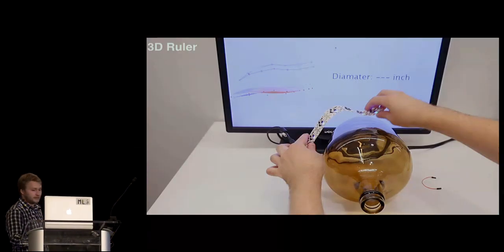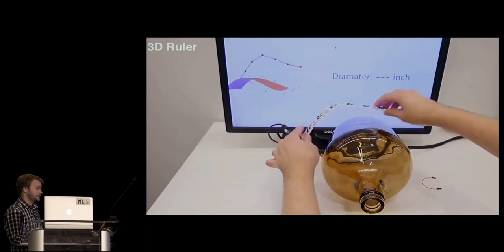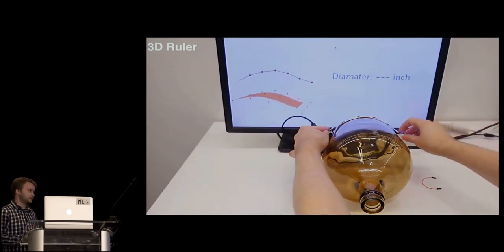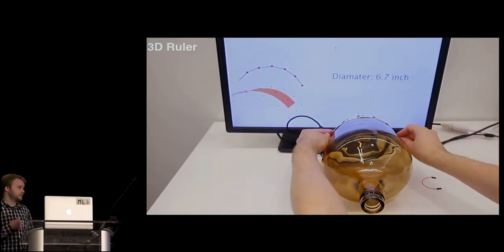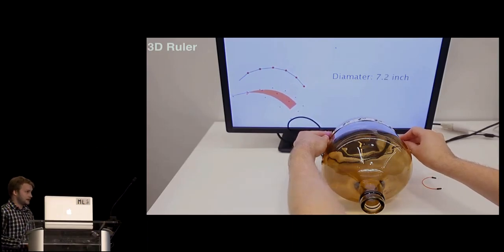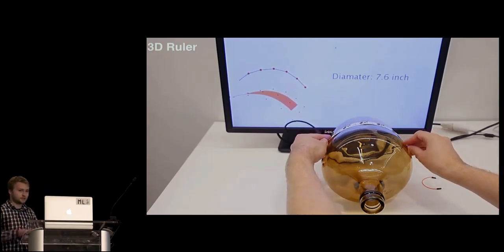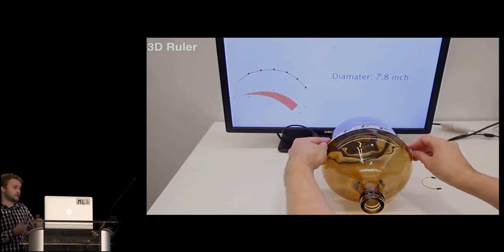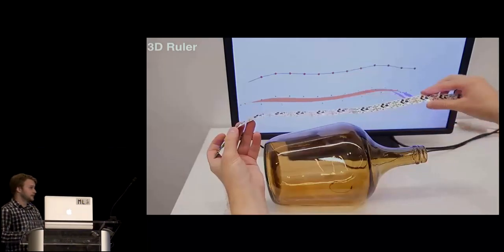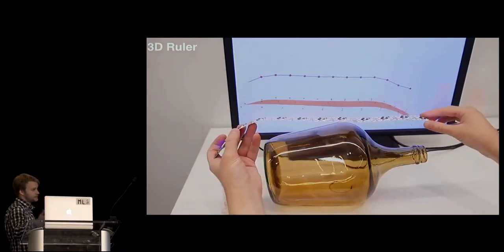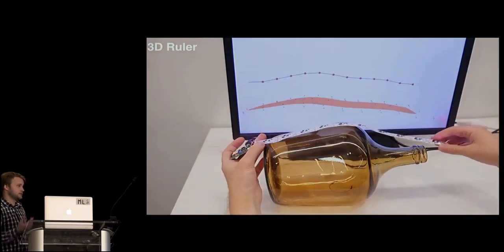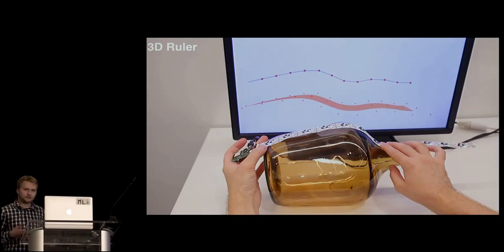So we looked at and made some applications. First one is 3D ruler. So here we use a tape to measure the diameter of this bottle. And this allows you can make a ruler which can measure anything. You can program it. You can add different lengths. So here it's longer to measure the contour of this bottle. So you can, for example, then import into some CAD software for analysis.